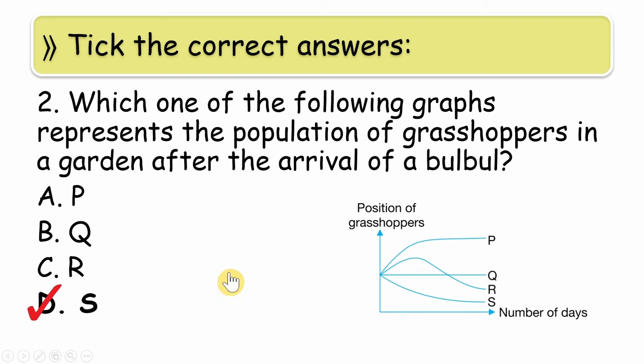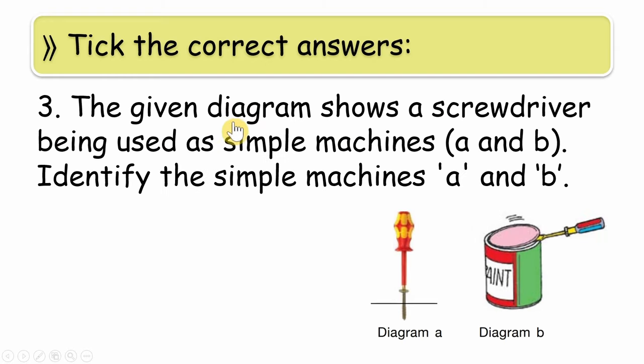Your time starts now. Time up, students. The answer is S. The grasshopper population will decrease. Why will it decrease? Because of bulbul, what will happen? Bulbul eats grasshoppers, so the grasshopper population will decrease.